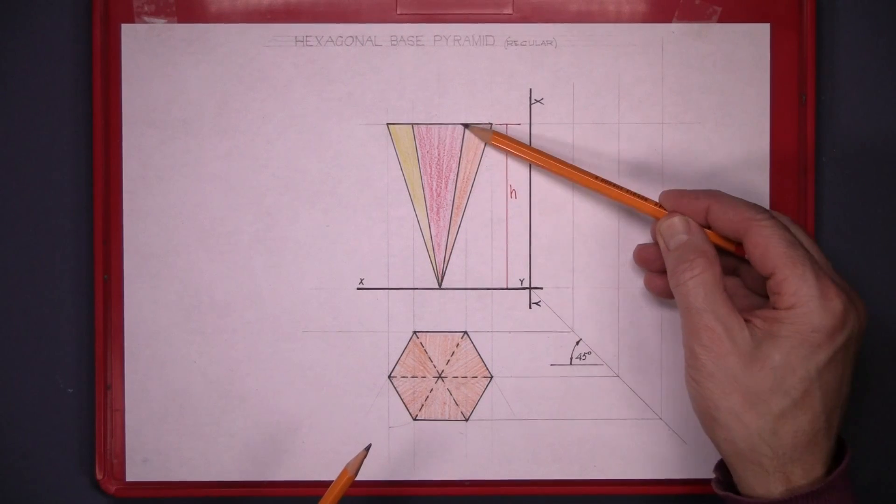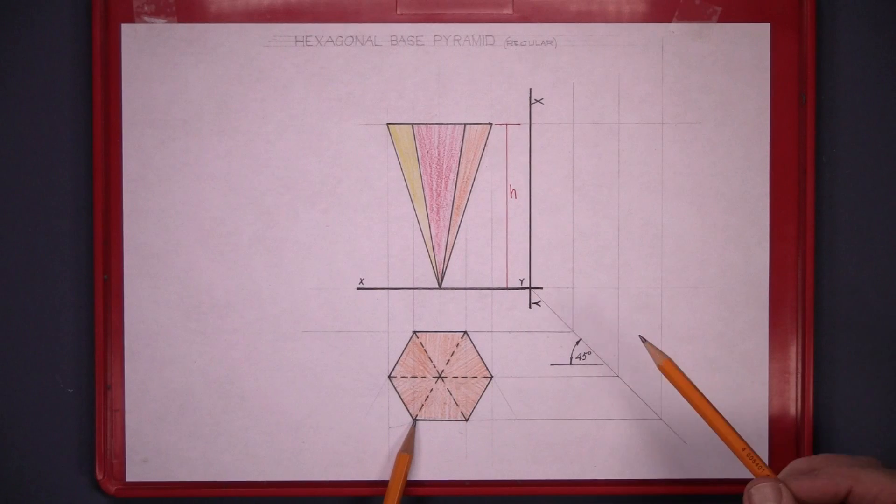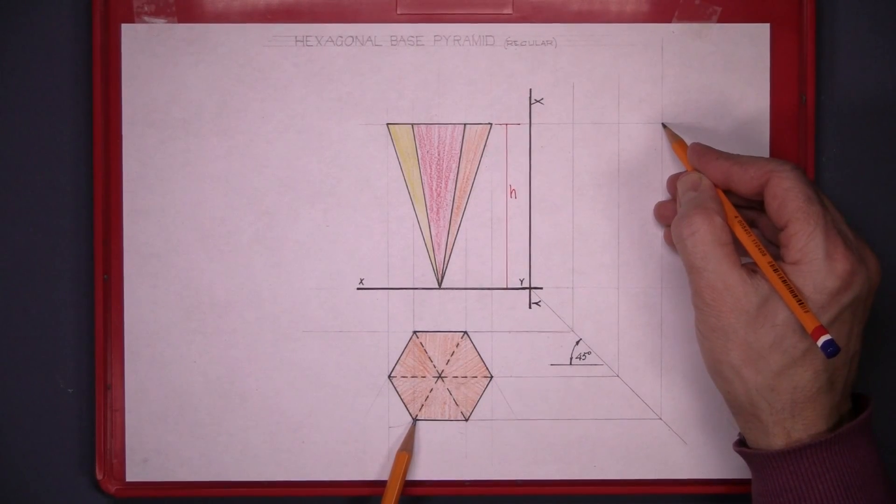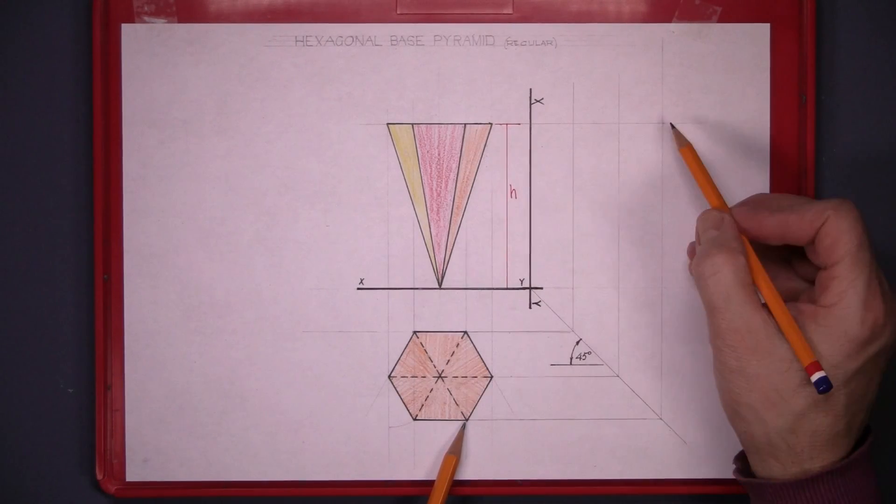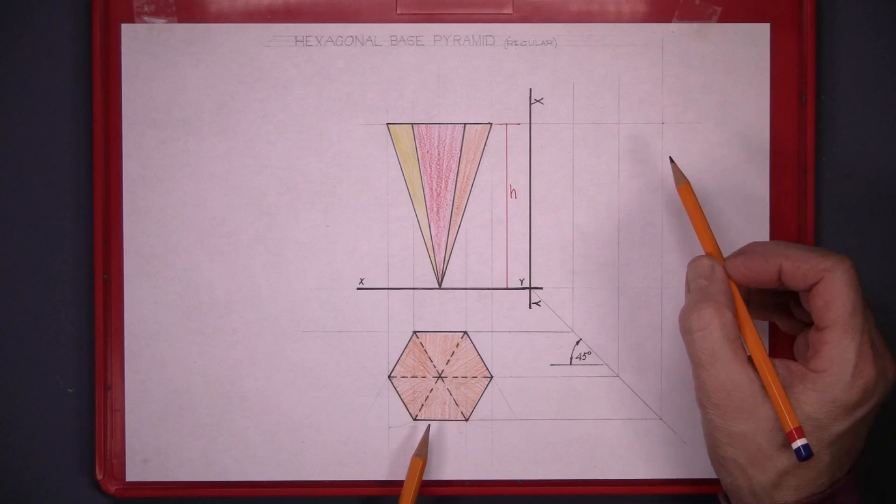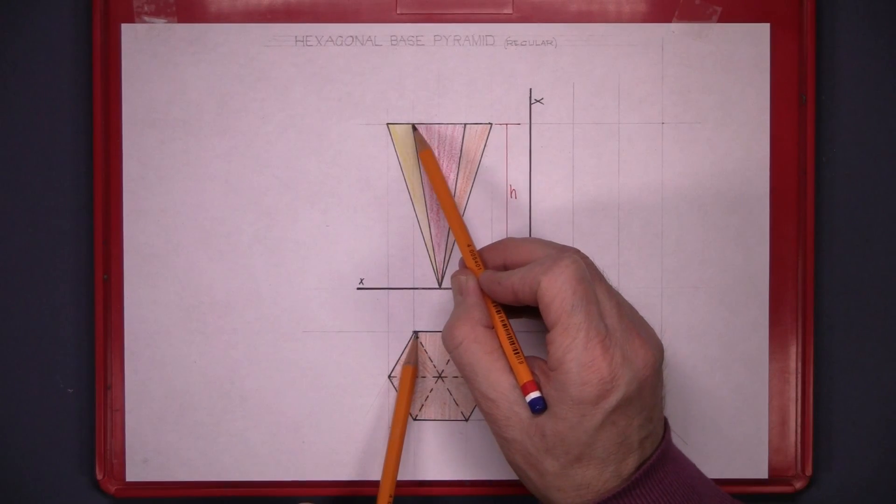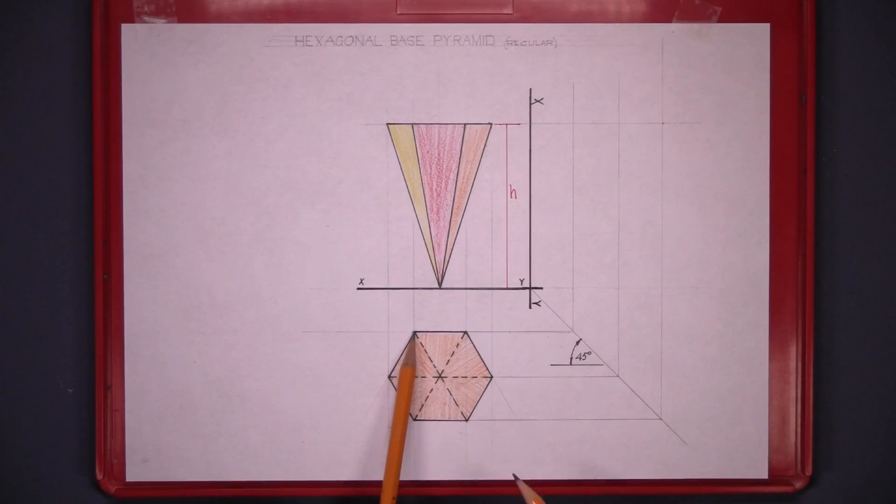These two points here are the outside points in plan. So it's the outside line. So bring those points out to the outside line. Now there's two points there. Now at the back there's a point directly behind and we bring that point across.